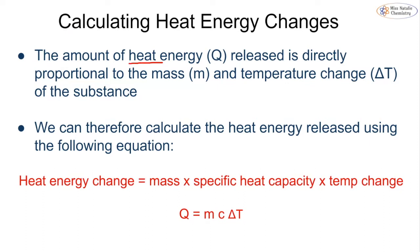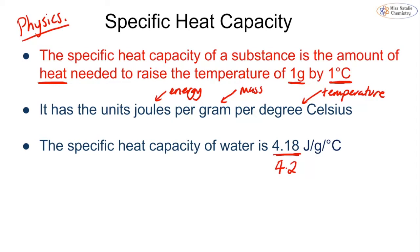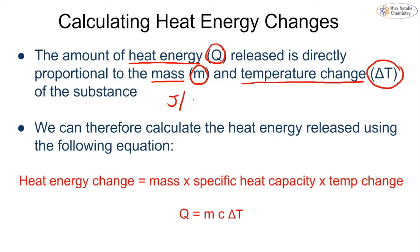The amount of heat energy, Q, is directly proportional to the mass M and the temperature change delta T. Our specific heat capacity has units of joules per gram per Celsius, so we have our heat, our mass, and our temperature change. We can calculate the heat energy using the equation: Q = m × C × ΔT, where Q is the heat energy change, m is mass, C is the specific heat capacity, and ΔT is the temperature change.